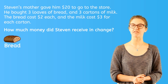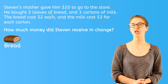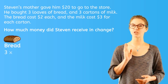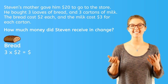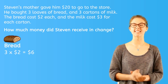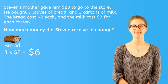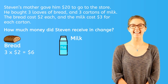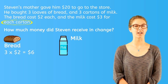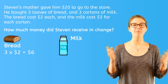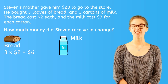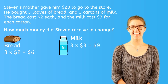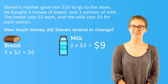Stephen bought three loaves of bread at $2 each. And the keyword 'each' tells us to multiply. Three times $2 equals $6. That means he paid $6 for bread. We also know that he bought three cartons of milk at $3 each. And again, we have the same keyword, so we multiply. Three times $3 equals $9. That means he paid $9 for milk.